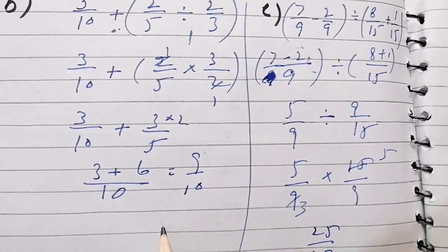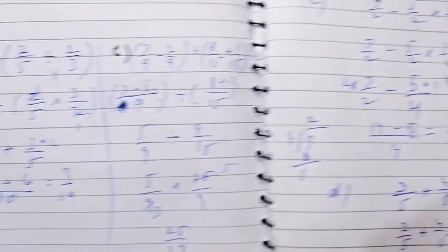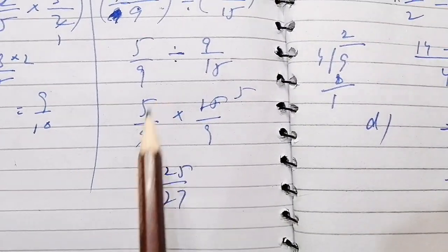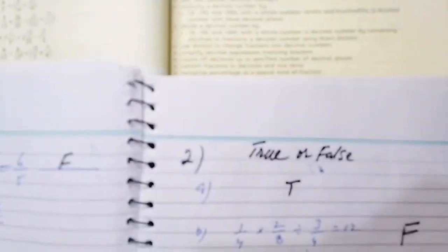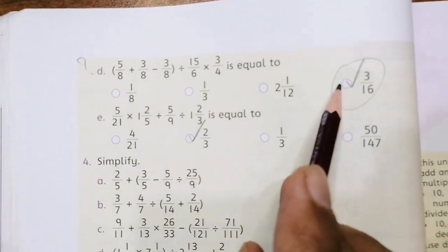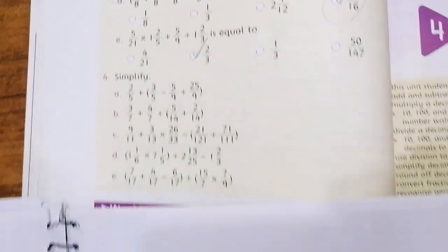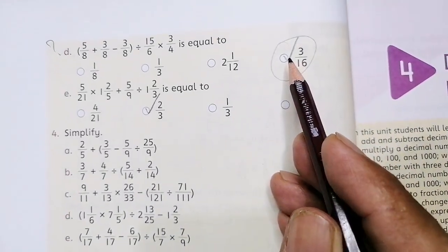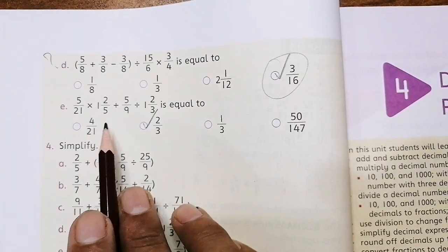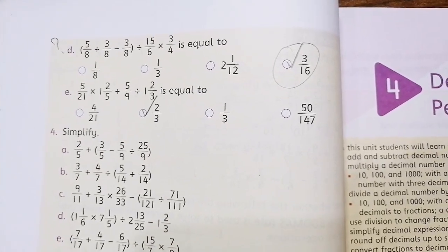B part: 9 over 10. C part: 25 over 7, this is I have solved it for you, 25 over 7. Then D part is equal to 3 over 16. And E part: 2 over 3, right?